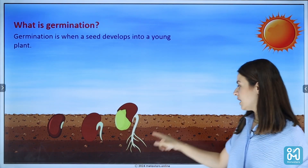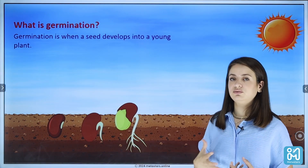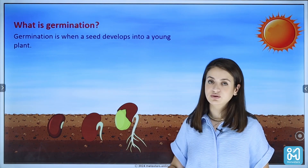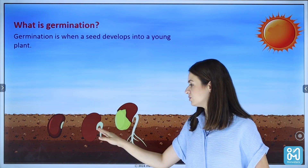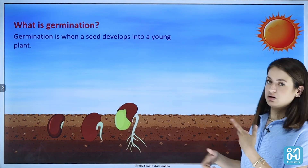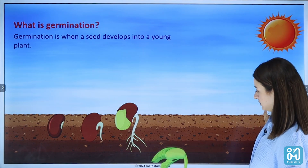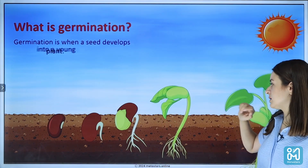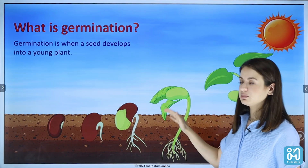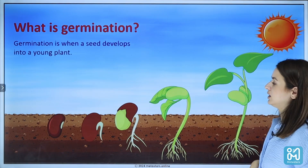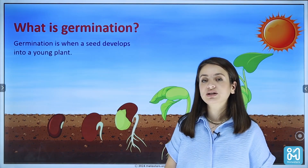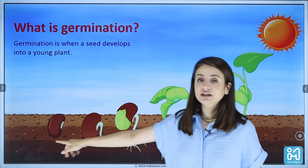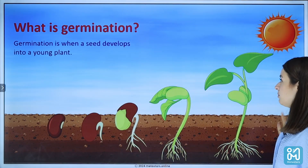After the roots have been developed, here we have the stem. So a seed develops roots and then the stem will develop. And after that, we will have a young plant as you can see over here. So again, germination is the process when a seed develops into a young plant.